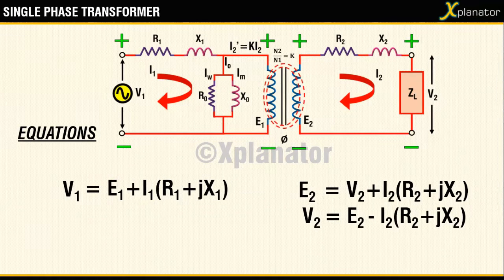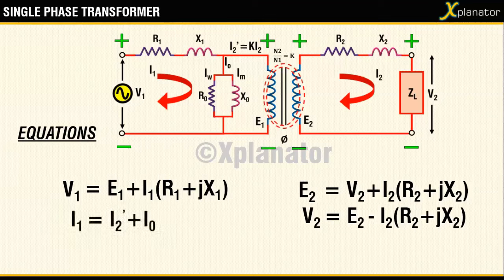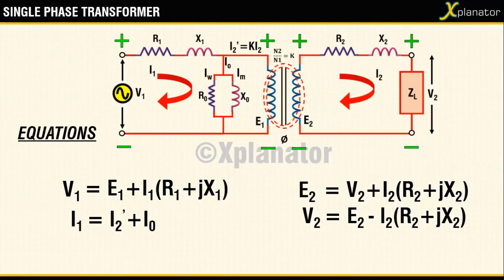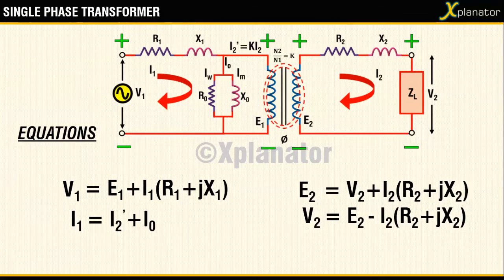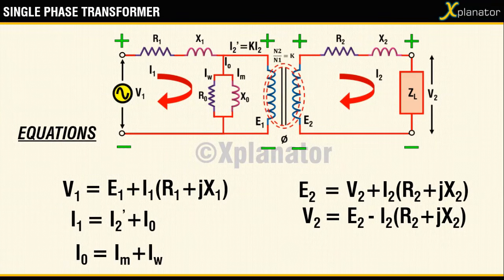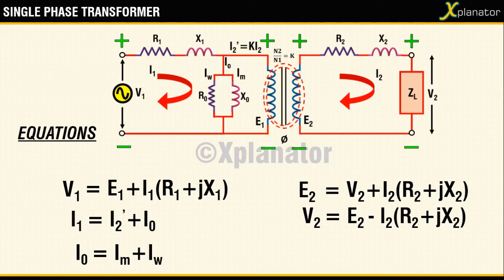The equation for primary current I1 is given as I1 equal to I2 prime plus I0 and that for no load current I0 is given as I0 equal to Im plus Iw.